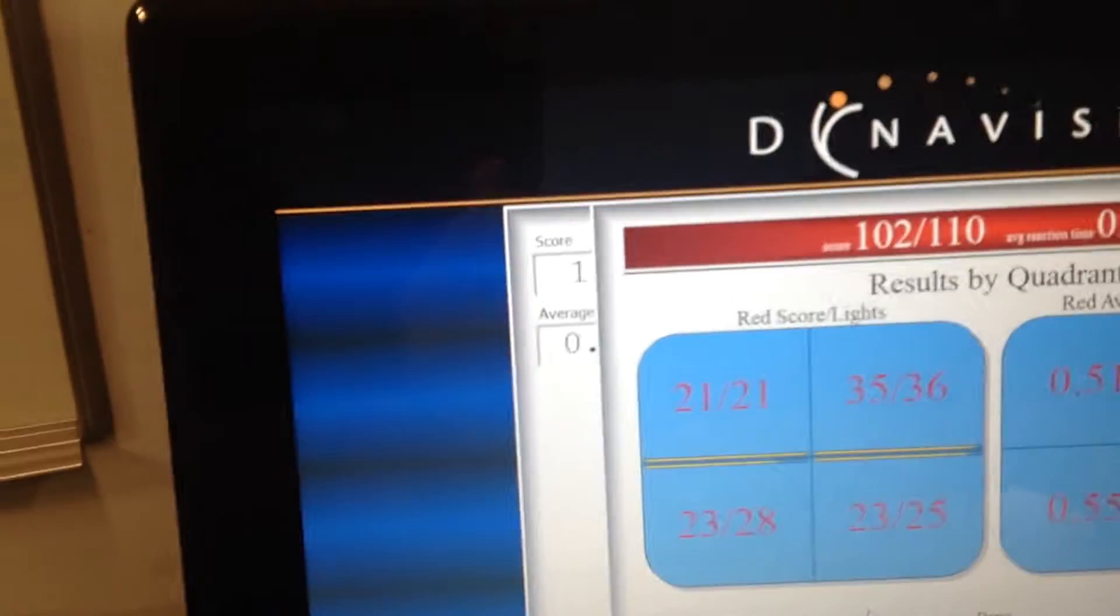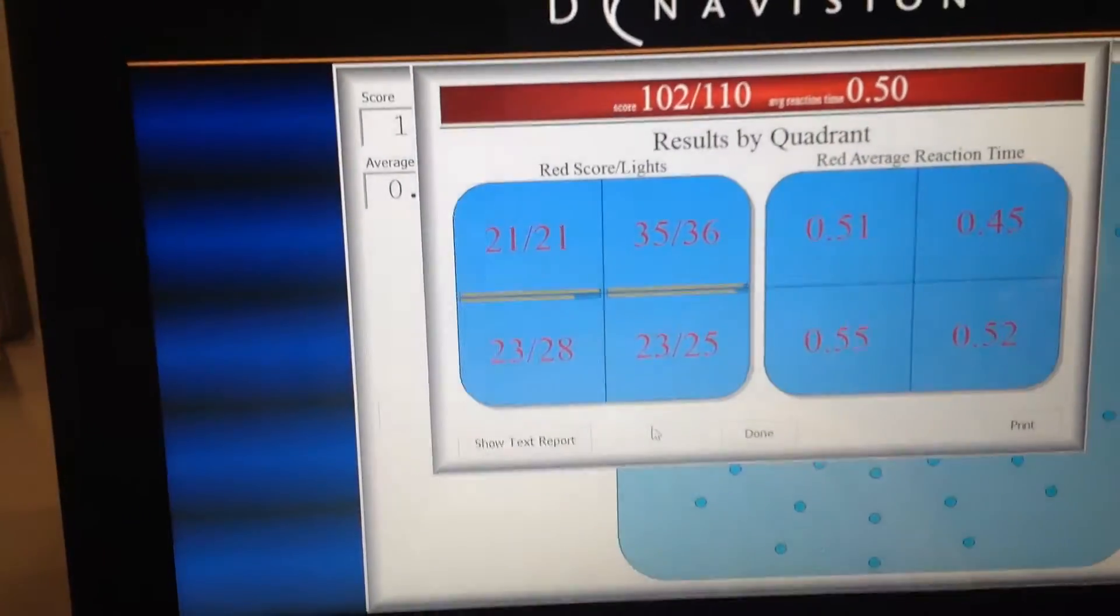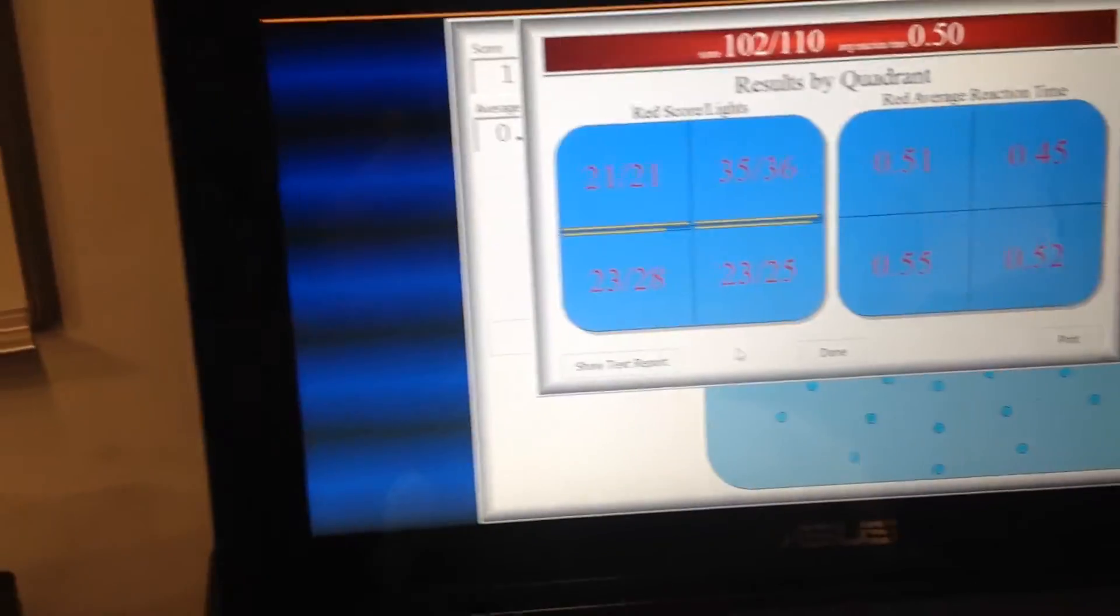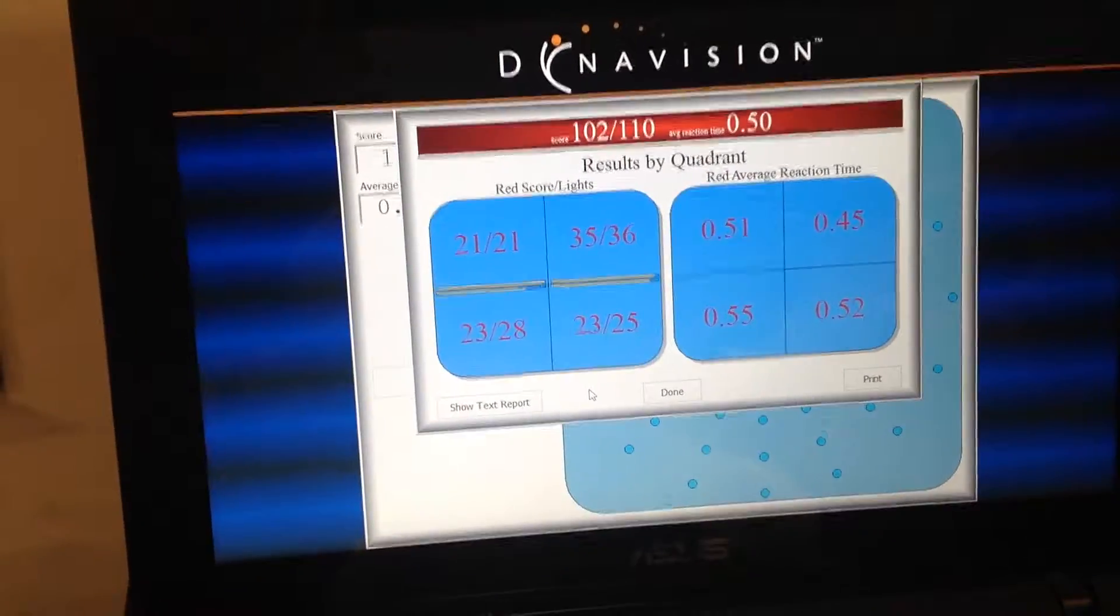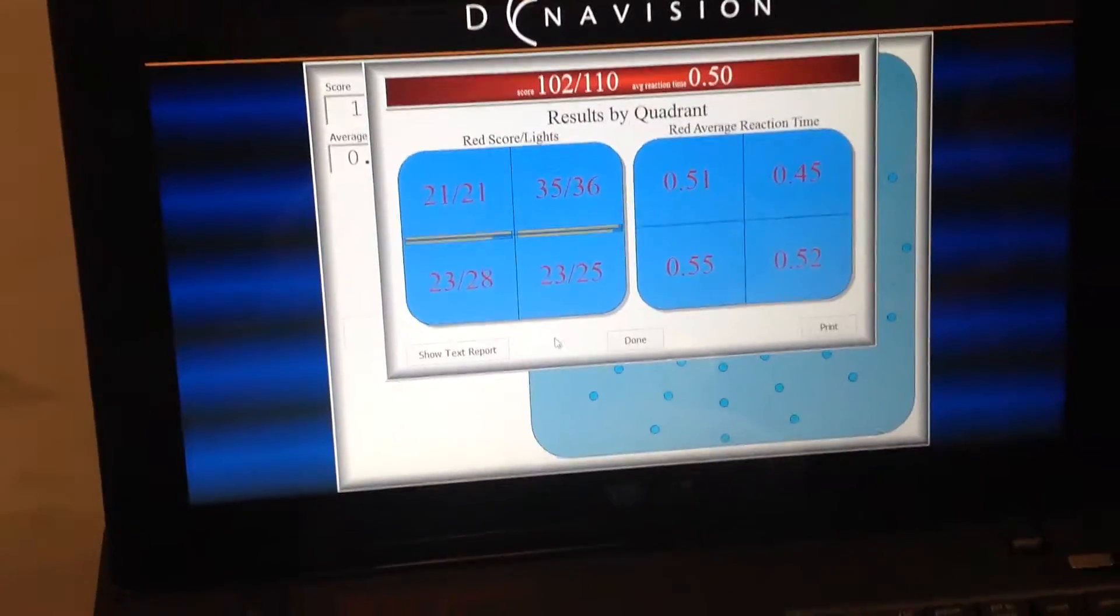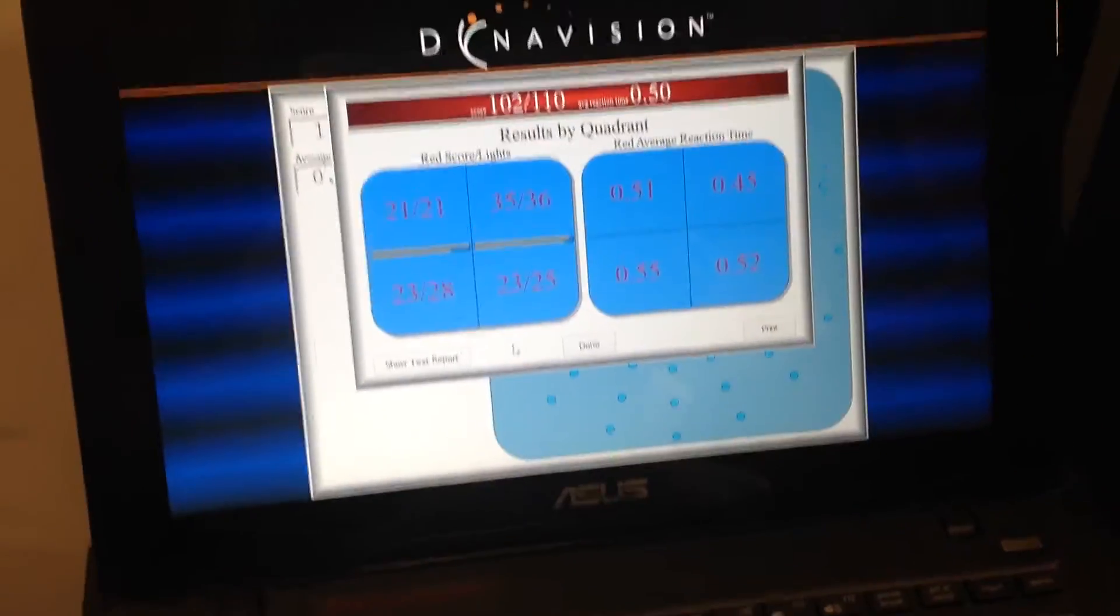What did we get? What did we get? Ooh, look at that. Whoa, big number, .5 reaction time too, half a second. Look at that, he's 102 out of 110, nearly 18 away from the safe zone. That's awesome, good job.